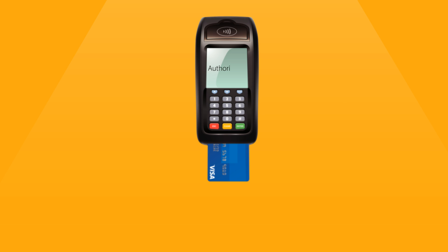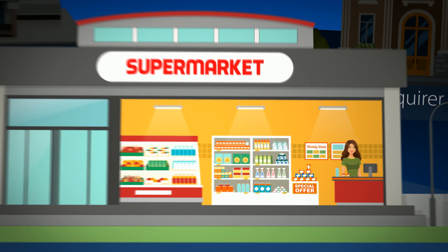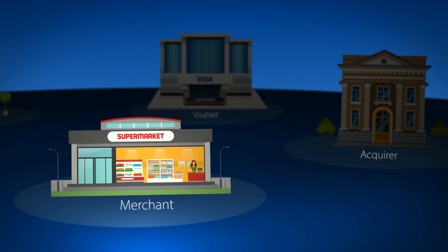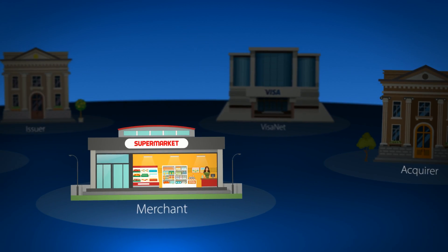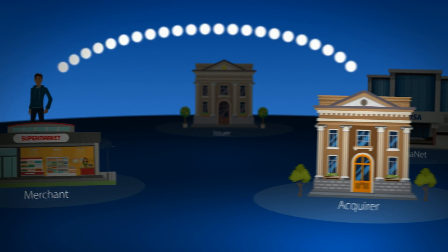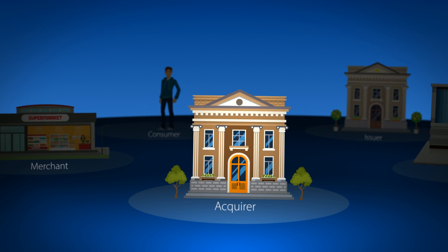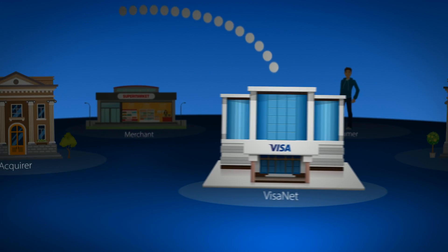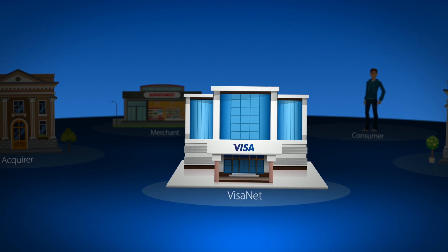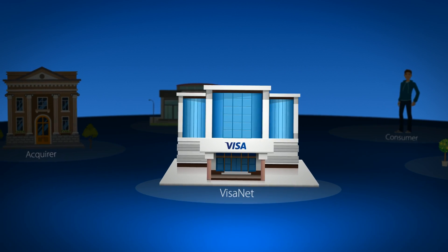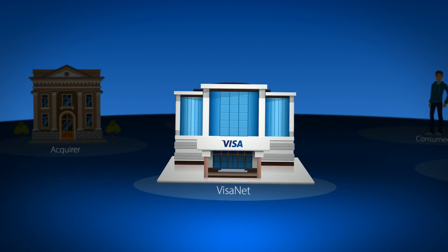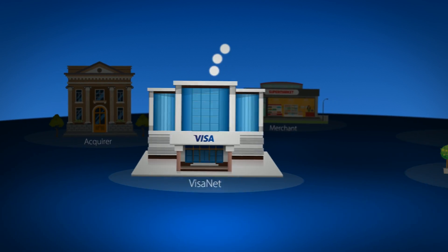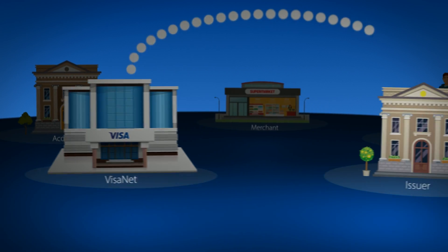Once the card is read by the point-of-sale device, a digital message containing the details of the transaction along with the consumer's account information is sent from the merchant to the acquirer. The acquirer will format the details of the transaction and then send the message to VisaNet. When VisaNet receives the message, it will run the message through a series of risk and fraud prevention tools to ensure that the transaction is valid and secure. The request is then routed to the issuer.